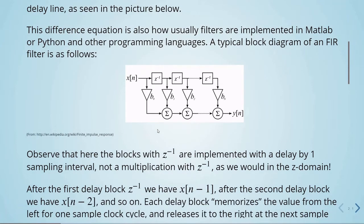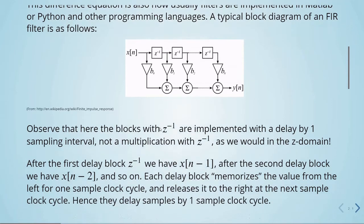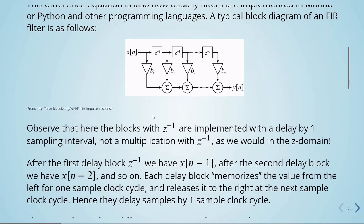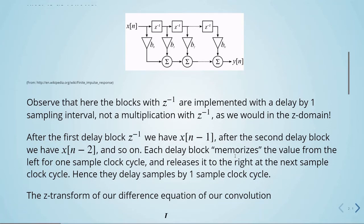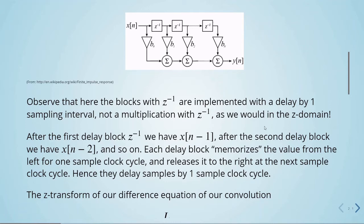The blocks with z to the power of minus one are implemented with a delay by one sampling interval — it's not a multiplication with z to the power of minus one as we would do in the z-domain. After the first delay block, we have x of n minus one; after the second delay block, we have x of n minus two, and so on. Each delay block memorizes the value from the left for one sample clock cycle and releases it to the right at the next sample clock cycle, delaying samples by one sample clock cycle.